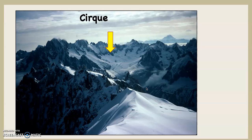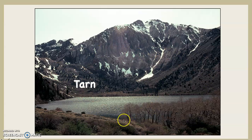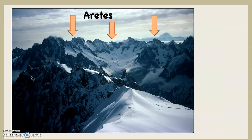Now let's look at some real pictures. The yellow arrow points at the cirque right here — you can see there's still a glacier in it, but it's clearly a bowl-shaped basin. This is a tarn at Convict Lake in the Sierra Nevada — you can see the cirque, and there's a lake in the cirque, making it a tarn. It's a very famous fishing lake stocked with rainbow trout. The orange arrows point at that sawtooth ridge — all those sawtooth peaks we call an arête.